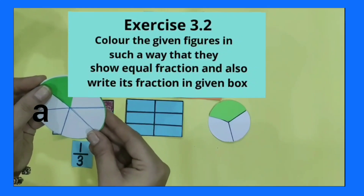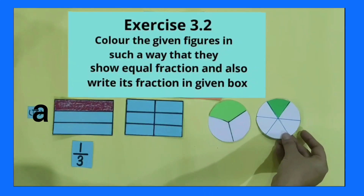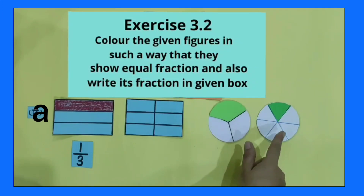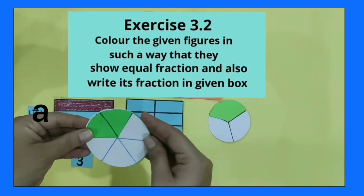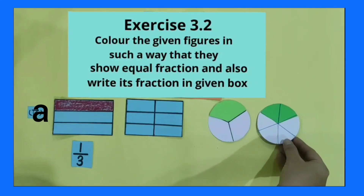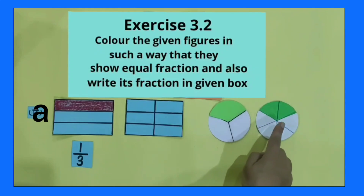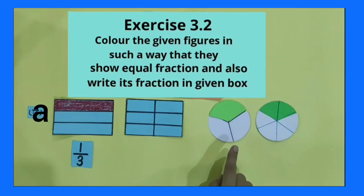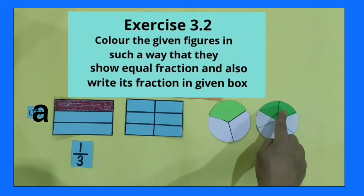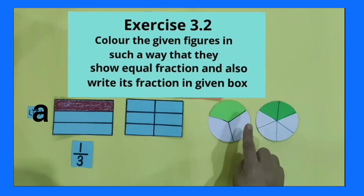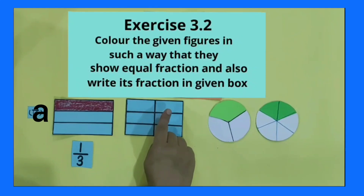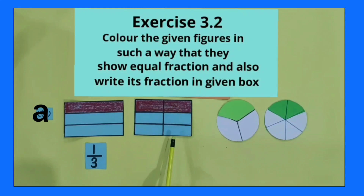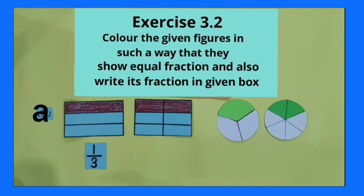Now compare these two circular shapes. Are these shapes equivalent to each other? No, these shapes are not equivalent to each other. You saw that two parts out of six equal parts are equivalent to one part out of three equal parts. And its fraction is two by six.